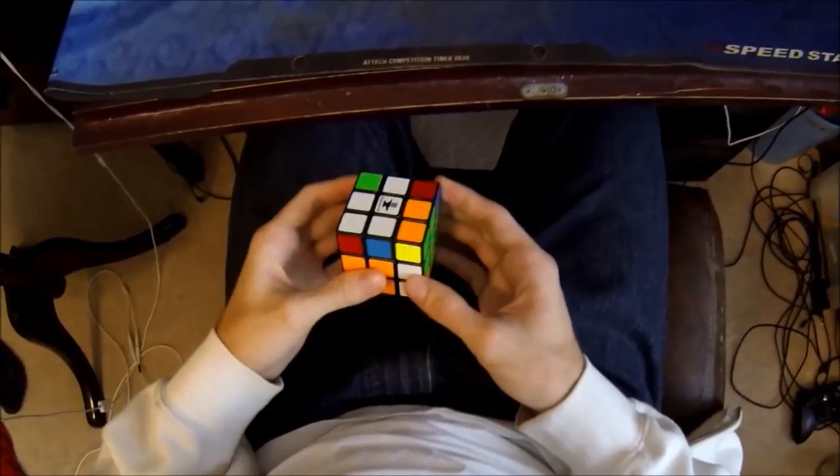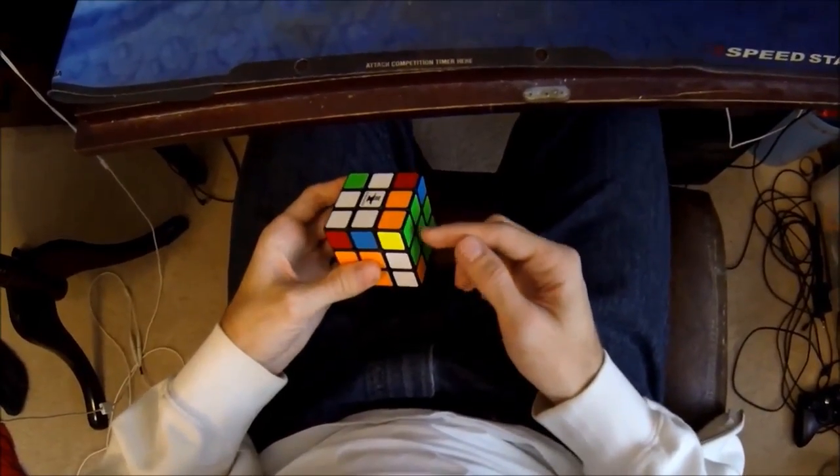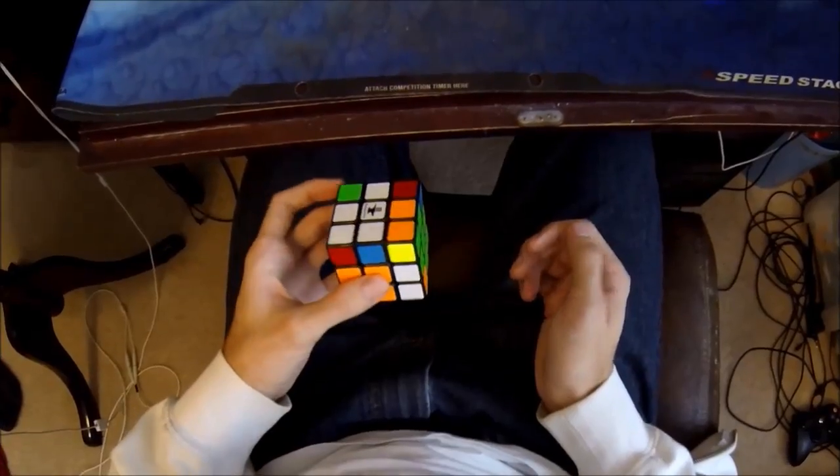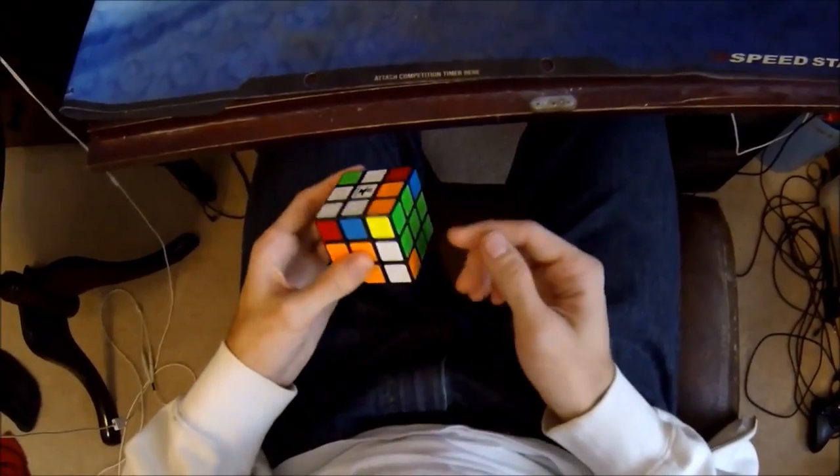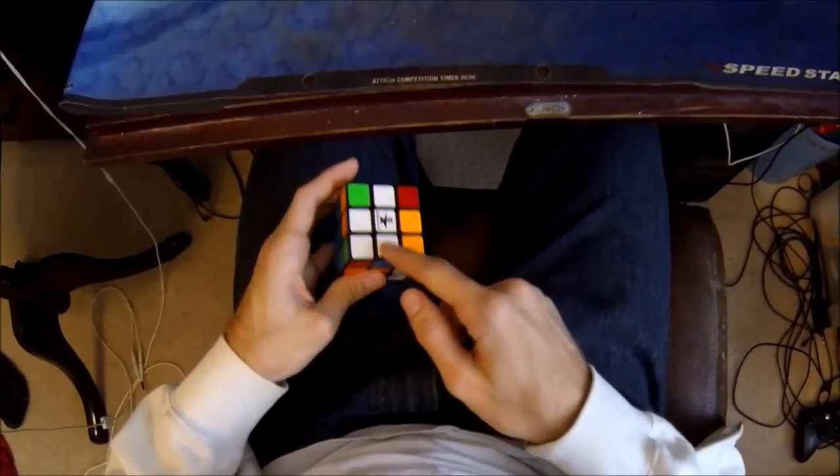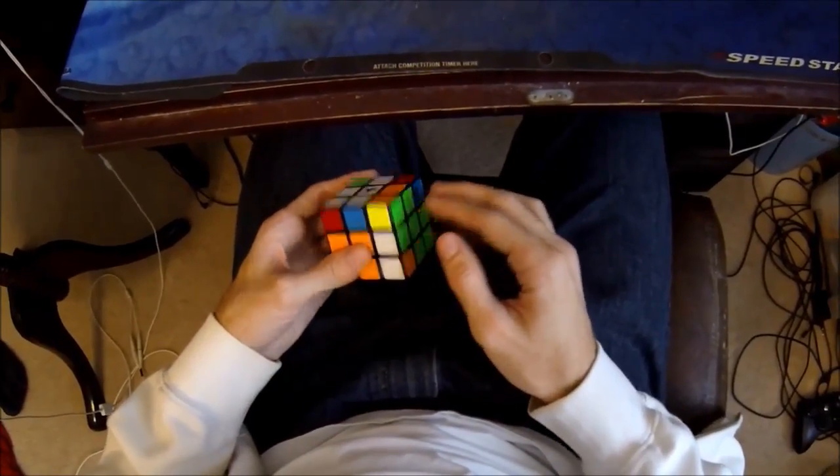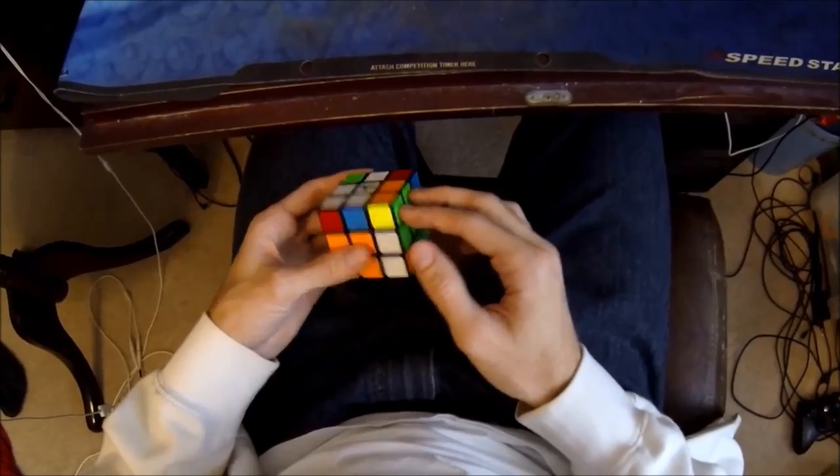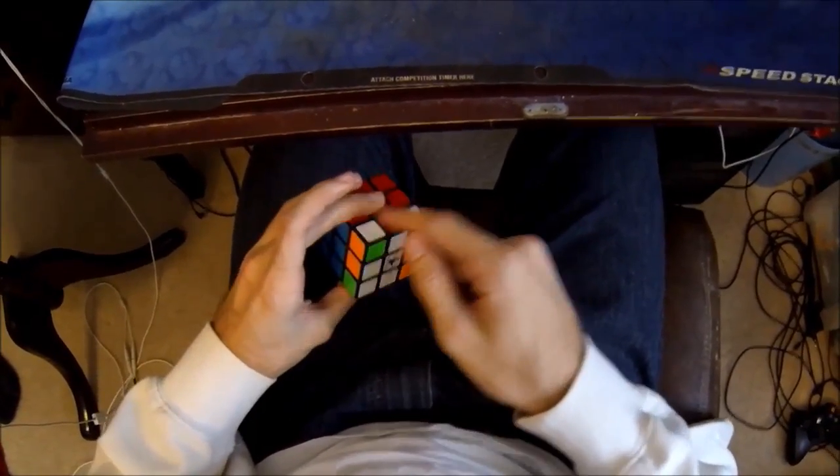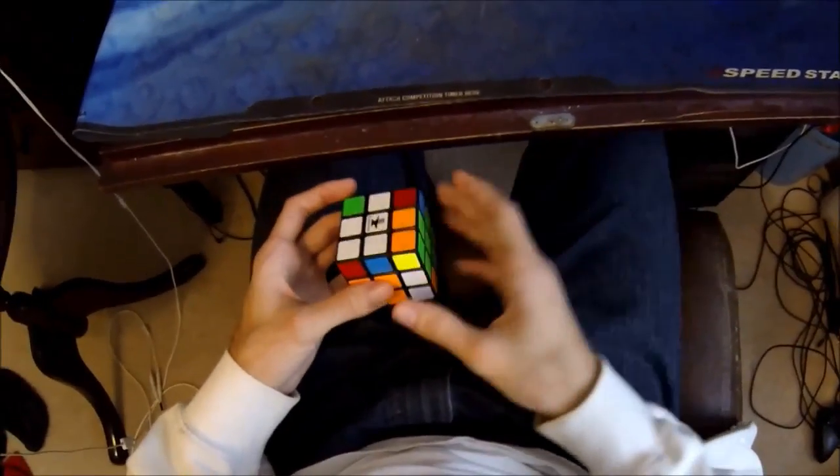Okay, on to some easier ones. This is Winter Variation. It's pretty popular among a heck of a lot of people. And what it does is if you have all of your edges oriented, you can insert the pair while solving your corner orientation. So you get an OLL skip.